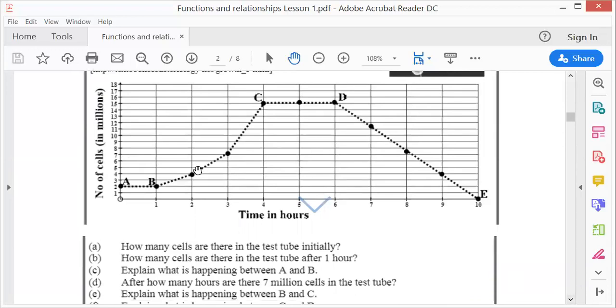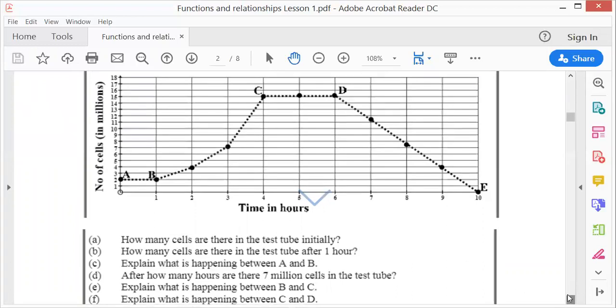Explain what's happening between B and C. Between B and C, you notice a line that goes up positively, so there's growth. However, it's not a straight line, it's zigzag. Therefore, we say it's non-linear. Remember, linear like from D to E is a straight line, but from B to C it's non-linear, but the bacteria is increasing.